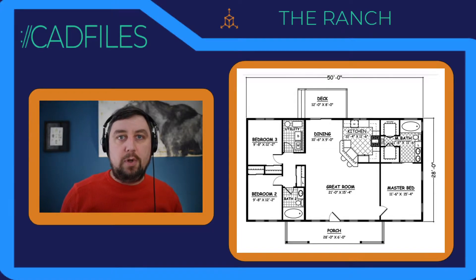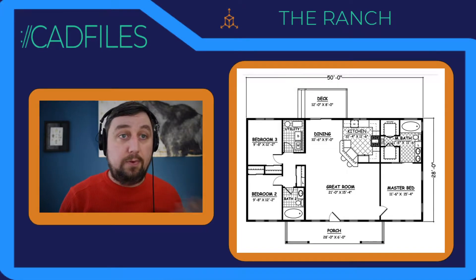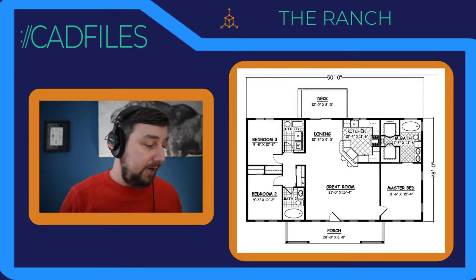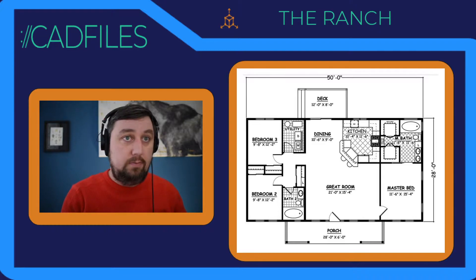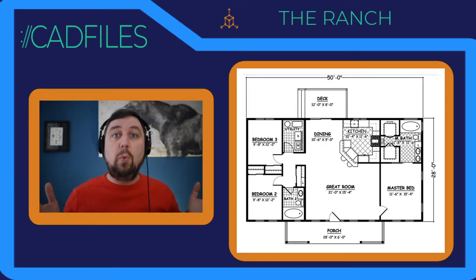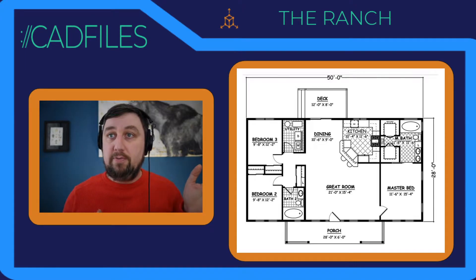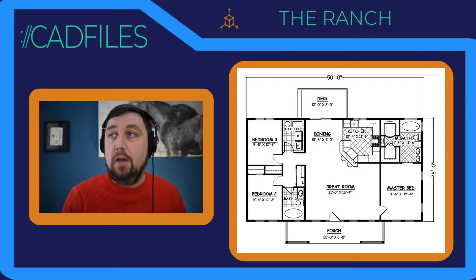We're on to our next SketchUp drawing. This time we're going to do a full floor plan of a full house — all the exterior, interior, all the good stuff that goes along with drawing actual plans. This one is a simple one-story ranch, rectangle rooms, shouldn't be too bad.